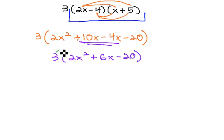Now, all that remains is just to distribute the 3 through the parentheses. This gives us 6x squared plus 18x minus 60. Then we have our final solution.